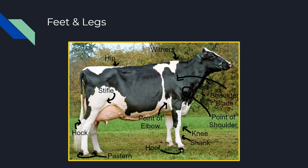We have hooves — everybody knows what a hoof is. We have the shank bone, also often called the cannon bone. The length of your cannon bone directly correlates to the height of the cow — a longer cannon bone means a taller cow. We have the knee, the point of the elbow, the point of the shoulder, and the shoulder blade. The shoulder blade or scapula is the bone that runs at an angle at the top of the front leg. The point of the shoulder is the little ball at the end of the scapula. And the withers — we want a good angle between the point of the shoulder and the withers.